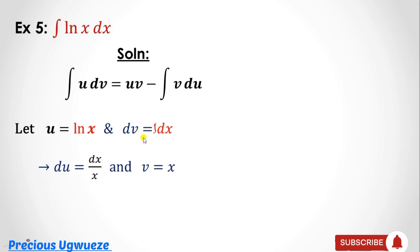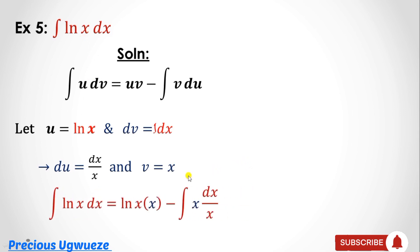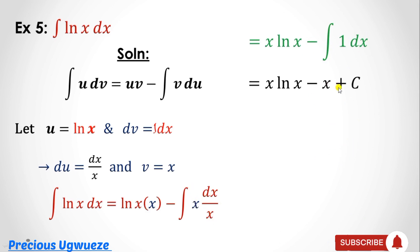Differentiating ln(x) gives du = dx/x. Integrating dv = 1·dx gives v = x. Substituting into the formula: ln(x)·x − ∫x·(dx/x). The x's cancel, leaving ∫1 dx. So the solution is x·ln(x) − x + C.